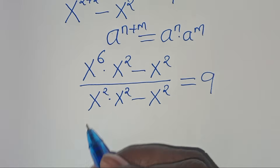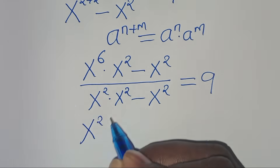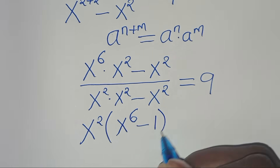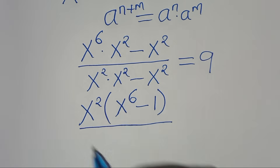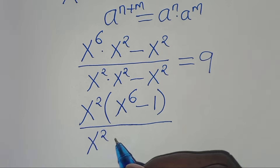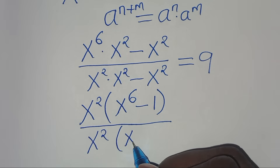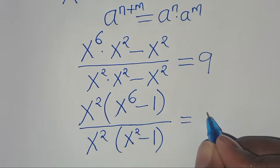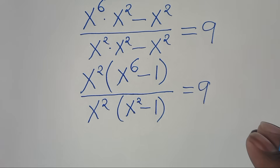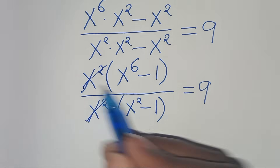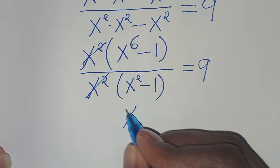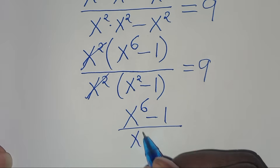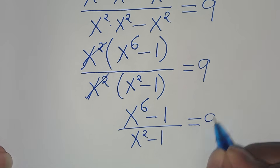Since x to the power of 2 is common, we can factor out x to the power of 2 so that in the parenthesis we have x to the power of 6 minus 1, divided by x to the power of 2 times the parenthesis x squared minus 1, equal to 9. Now x to the power of 2 cancels, giving us x to the power of 6 minus 1 divided by x to the power of 2 minus 1, equal to 9.